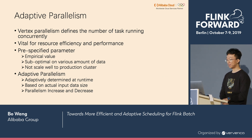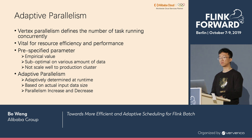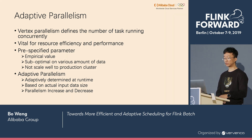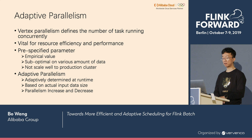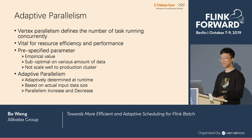In the distributed computing platform, parallelism is vital for both resource efficiency and performance. However, in Flink, the parallelism is a pre-specified parameter, which is an empirical value, and sometimes it is not very optimal for various amounts of data. In production clusters, it is even harder to scale well to various input data sizes.